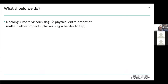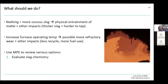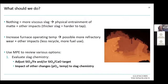So what should we do? We can do nothing and run as normal — we'll likely end up with a more viscous slag, training more metal in that slag, higher copper losses, and a thicker slag that's harder to tap. Knowing that, we might decide to increase operating temperature — but we could end up with more refractory wear and knock-on impacts such as using less recycle or more fuel. But if we use a tool like MPE to review options, we can evaluate the slag chemistry by adjusting fluxing targets or ratios, and also adjust oxygen potential and bath temperature simultaneously — running all these scenarios before actually treating the material.